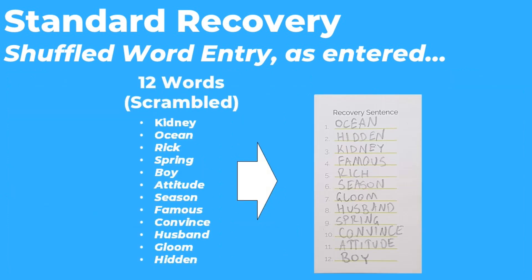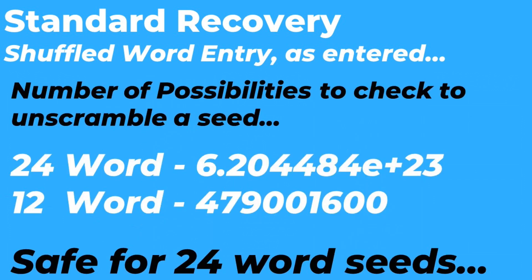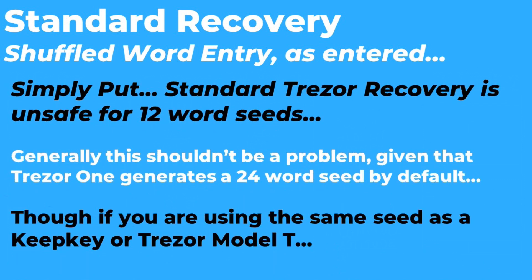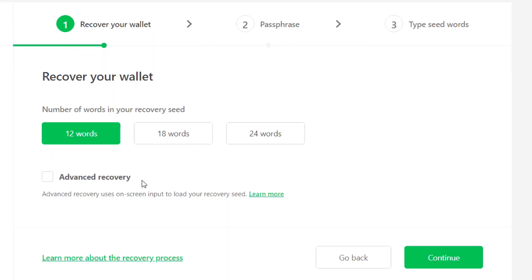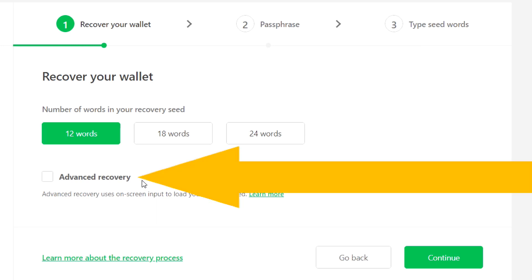With a 24-word seed, if someone has all 24 words but doesn't know the order, they can't do anything with that — it would still take thousands of years to brute force. Whereas if someone has a 12-word seed, even without knowing the order, it can be unscrambled in a trivially short amount of time. So if you have a 24-word seed either recovery method is fine, but if you have a 12-word seed you really need to stick to the advanced recovery process.